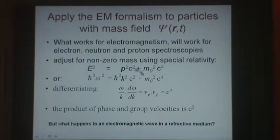Energy squared equals momentum squared plus mass squared. Or rewriting, h squared omega squared equals h squared k squared c squared plus m squared c to the fourth.